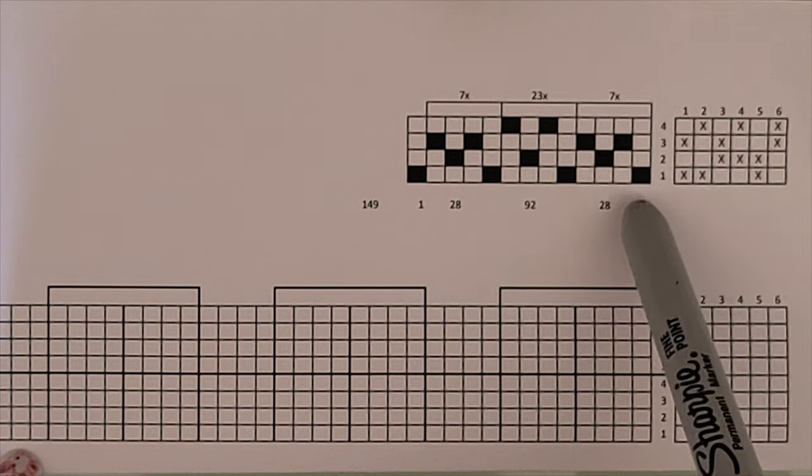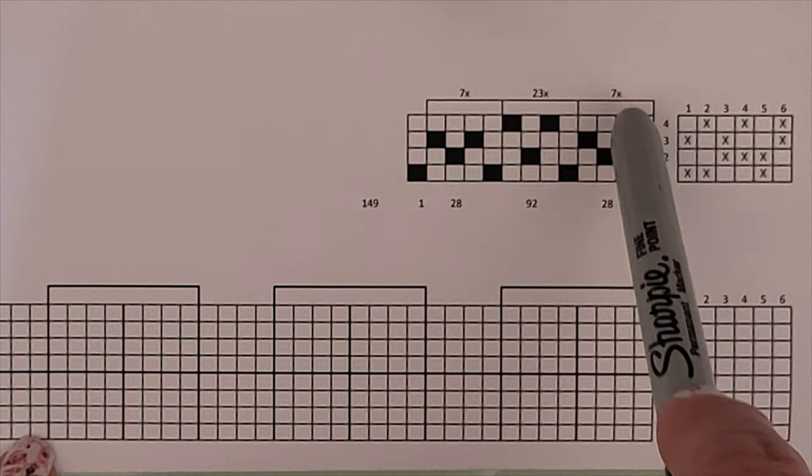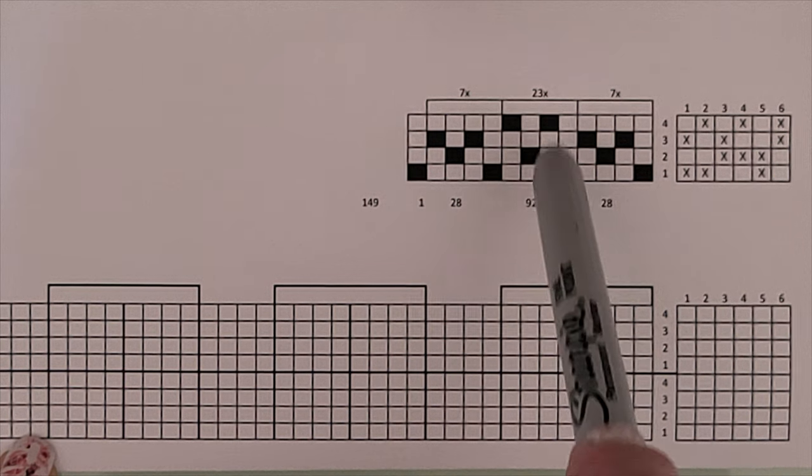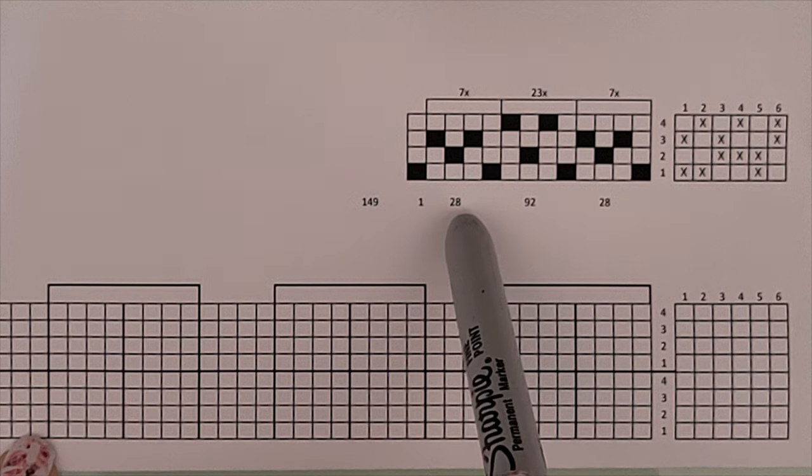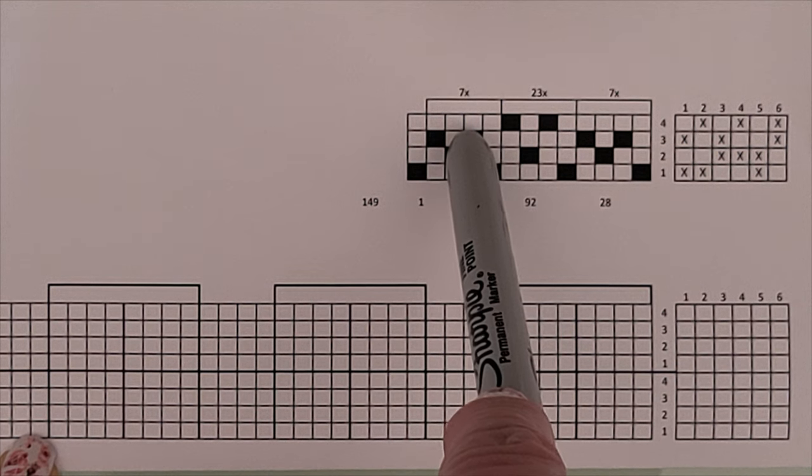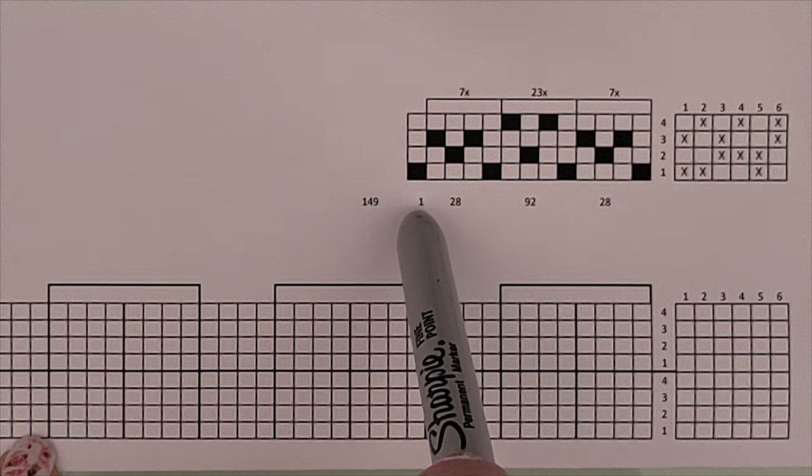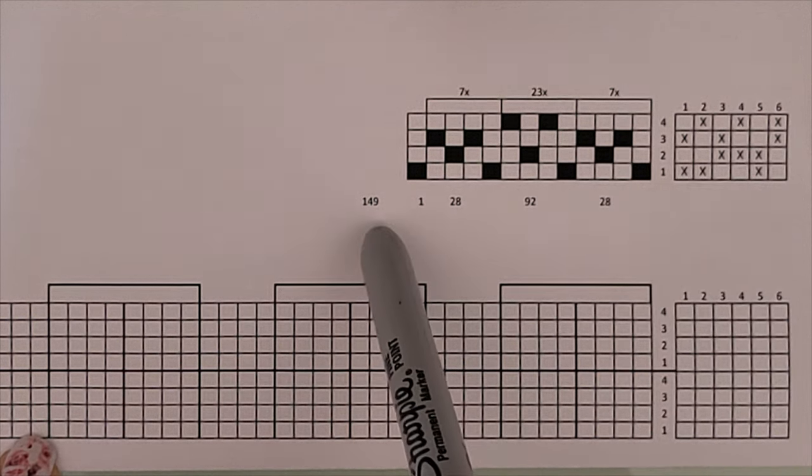So I take the original pattern here. It's got 28 threads in the first repeat of seven, 92 threads in the second repeat of 23, and then 28 threads again in seven repeats, and one additional thread on the end to balance the one over here. That's 149 threads.